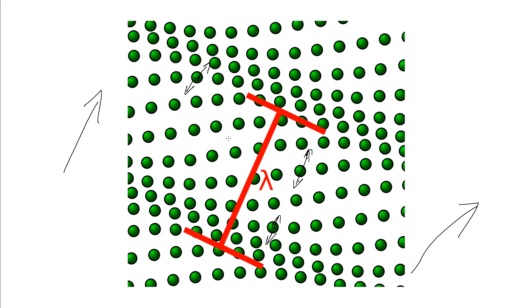So in a longitudinal wave the direction of the displacement, the direction of oscillation is parallel, is in the same direction as the direction of the wave motion, the wave speed.